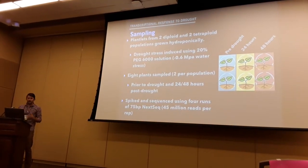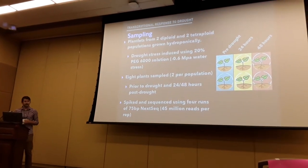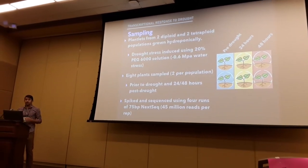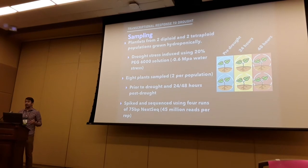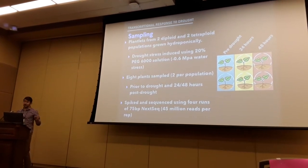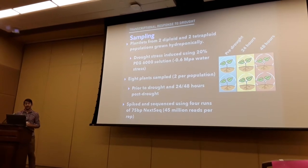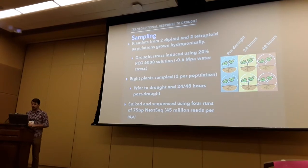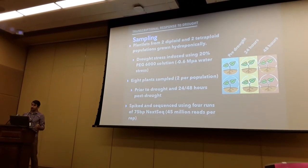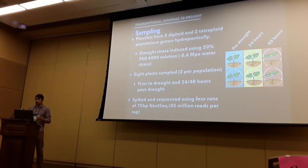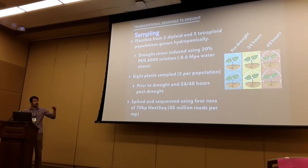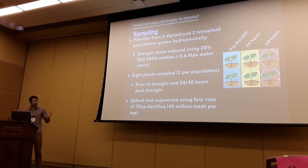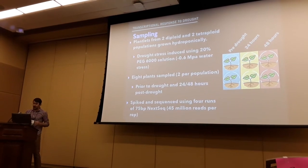For this study, we had four tetraploid and four diploid individuals, representative of two populations each. We grew these hydroponically so they could have equivalent water availability without worrying about soil issues. To induce drought stress, we treated the hydroponic solution with a 20% PEG-6000 solution, equivalent to negative 0.6 megapascals of water stress. We sampled plants at time zero prior to water stress, then 24 and 48 hours post-drought. We did synthetic RNA spike-ins and sequenced using four runs of Illumina NextSeq, ending up with around 45 million reads per replicate after cleaning.